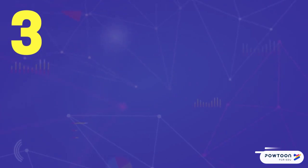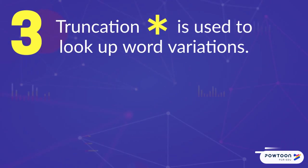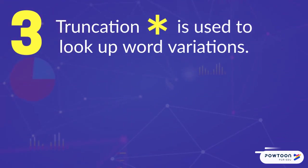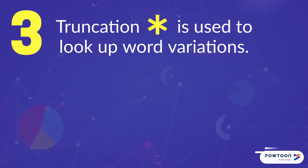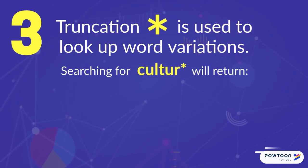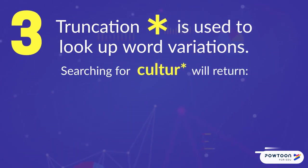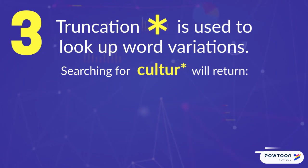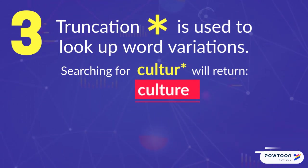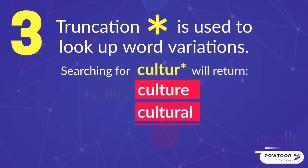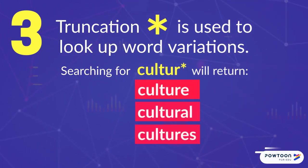Tip 3: Truncation. An asterisk is used to look up word variations. For example, searching for C-U-L-T-U-R* will return culture, cultural, and cultures.